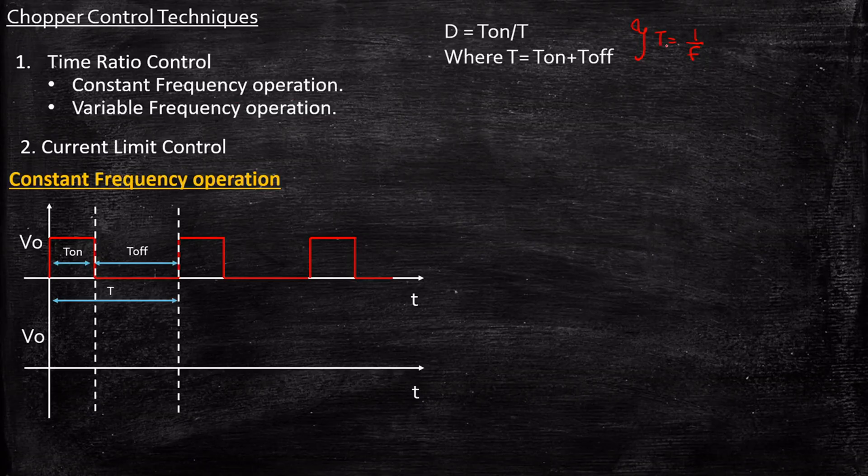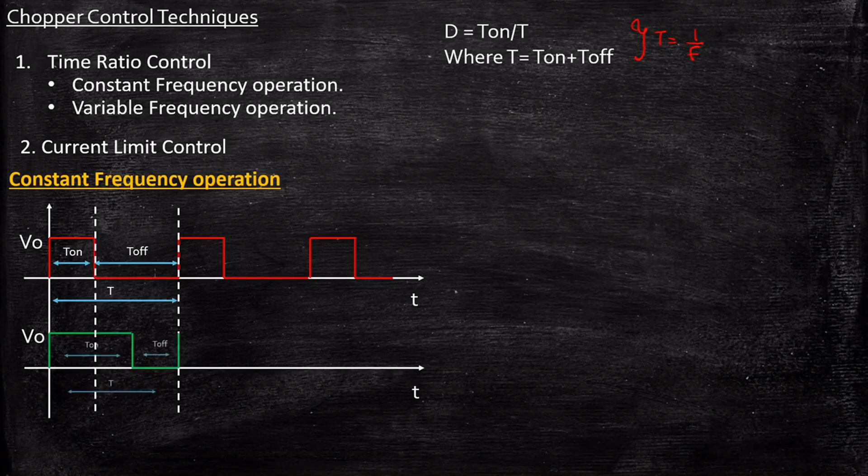As a result, the total time period will be kept constant. I'll only be varying the T_on. I'll be changing the T_on from this duration to this duration, but I will maintain that T to be the same as it was previously. The T_on is changing, but T is the same if you carefully observe. If you find the average output voltage for these waveforms, you will see the average output voltage in this waveform is much more than this because you have a greater duration for which the circuit is turned on.